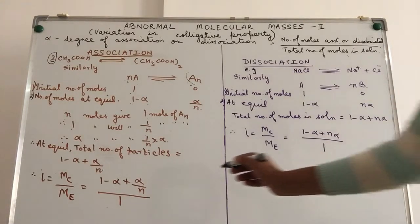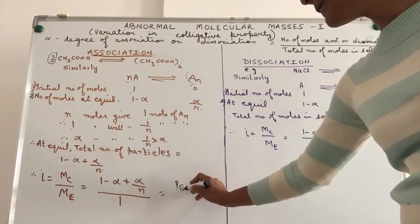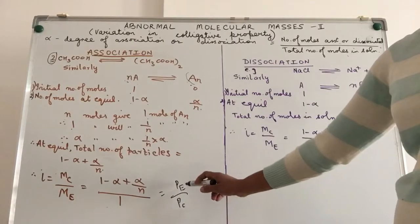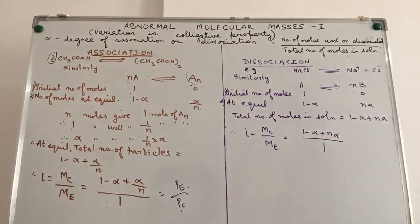So, this is related to your experimental property divided by the calculated property. So, this is your experimental number of particles and your calculated number of particles. Here, if you notice now, we'll stop over here.